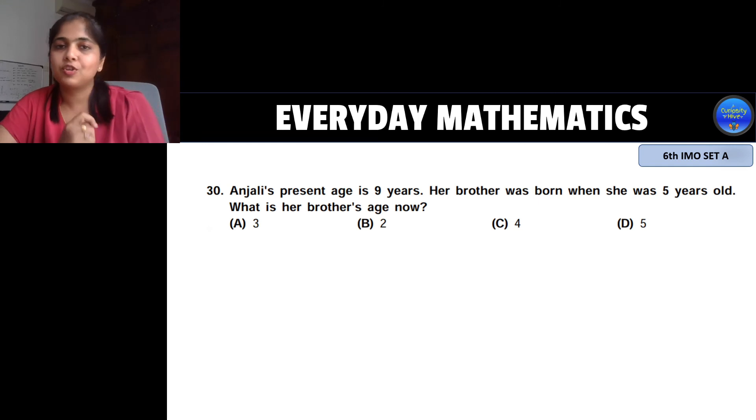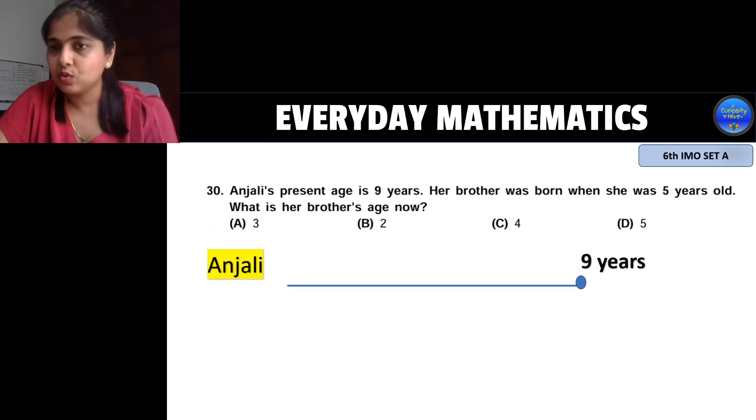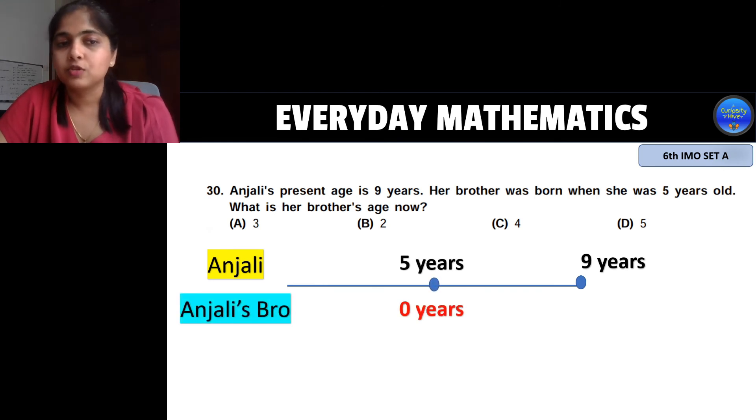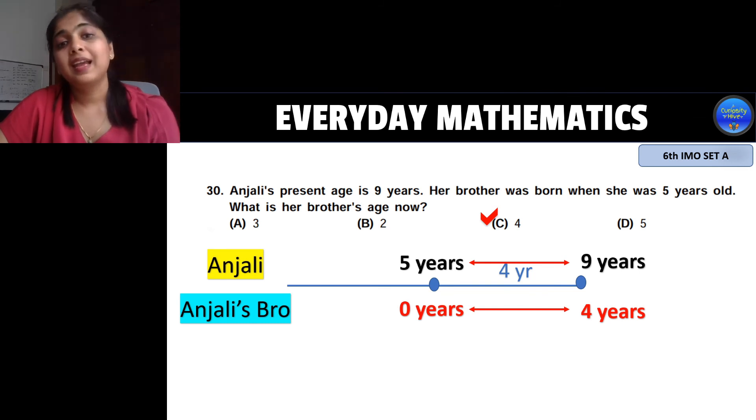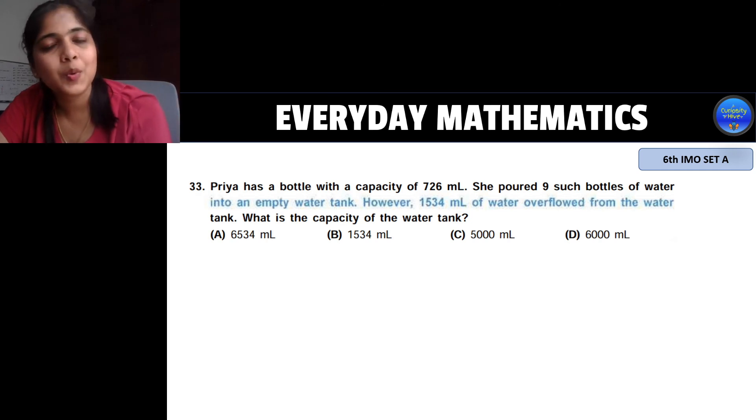Next question. Again an age one. I am sure now you will get it very quickly. Here what they say is that Anjali is 9 years old today but when she was 5 years old her brother was born. So her brother was 0 years at that time. When Anjali was 5 years old it was 4 years from today. So what is her brother's age now? So we just add 4 to 0 years. So her brother's age now is 4 years. So your right answer is option C, 4.